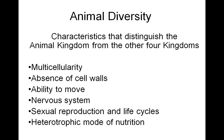Characteristics that distinguish the animal kingdom from the other four kingdoms are that animals are multicellular, there is an absence of cell walls, animals generally have the ability to move or have locomotion in at least one stage of their life cycle. We start to see the development of nervous tissue in some of the lower animals as it progresses to a sophisticated one in the higher animals.